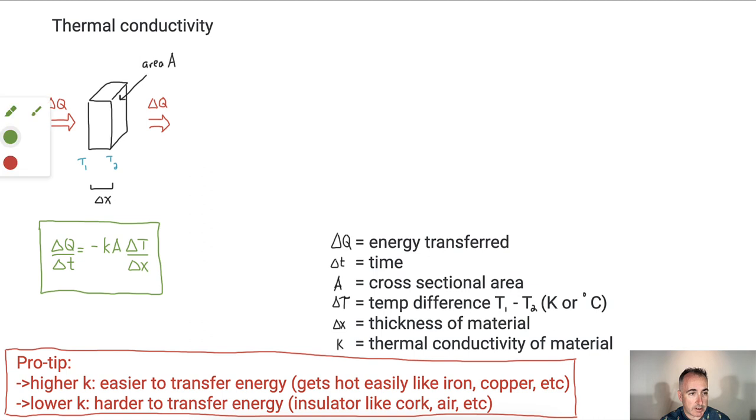Let's try to figure out what units we're looking at. Delta Q is energy transferred in joules. Change in time is in seconds. Cross-sectional area is in meters squared. Temperature difference can be either in Kelvin or Celsius. Thickness of material is in meters. So what's this thermal conductivity going to be? I'll get k by itself. So k equals delta Q over delta t, over A, times delta X over delta T.